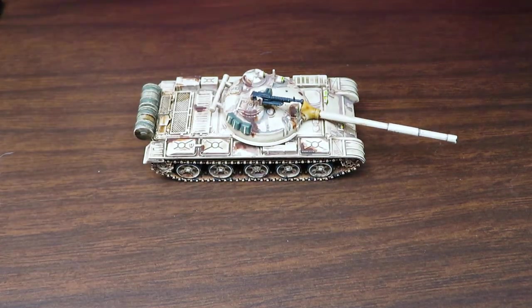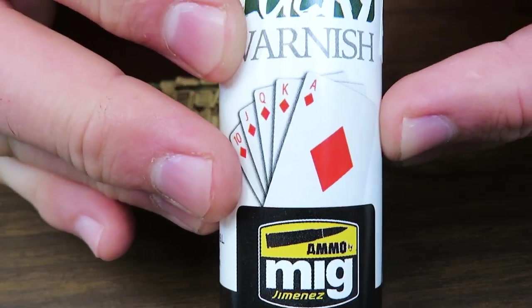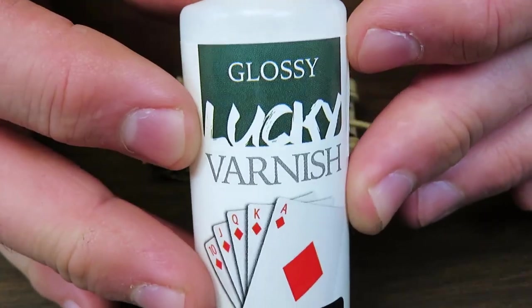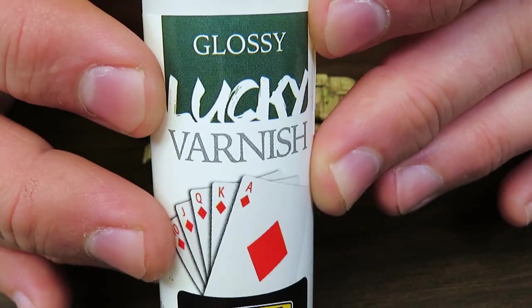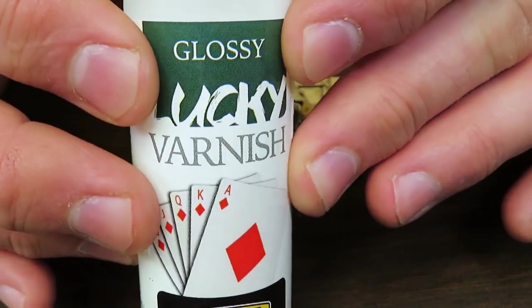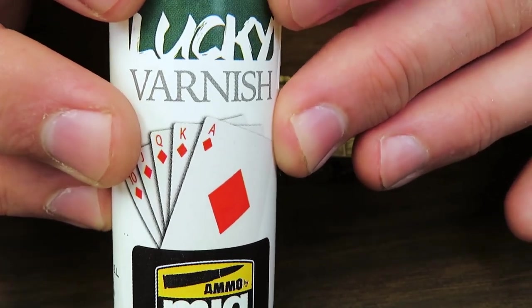So what I like to use is the glossy varnish from Ammo of MIG. I normally will run this through my airbrush to airbrush it on because it gets it smoother, but we don't have that set up here right now and so I'm just going to brush it on to the side of the turret of this tank.